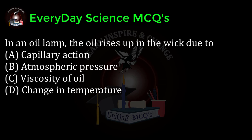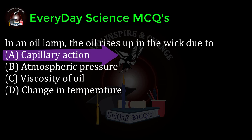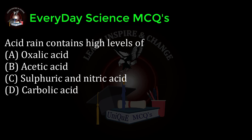A heating element of an electric heater is made up of: a) tungsten, b) graphite, c) nichrome, d) chromium. Correct answer: c. In an oil lamp, the oil rises up in the wick due to: a) capillary action, b) atmospheric pressure, c) viscosity of oil, d) change in temperature. Correct answer: a.